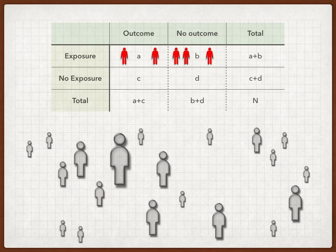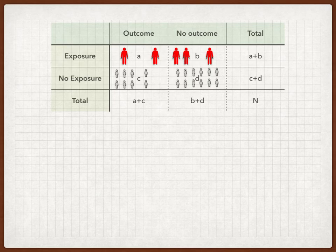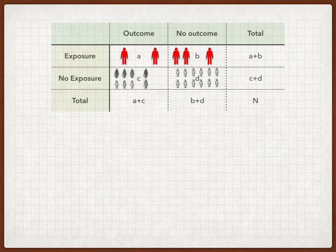So we're going to put them in their respective groups. Remember, just because somebody's not exposed doesn't mean they won't develop the outcome — some of these folks still develop outcomes. Now we're going to look at the ratio between people who develop an outcome with a known exposure relative to those without that exposure, to find out how much that exposure correlates with the outcome.